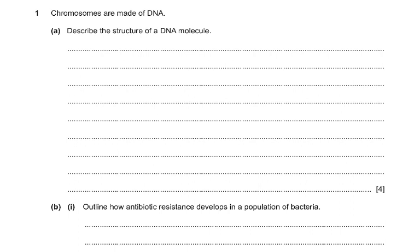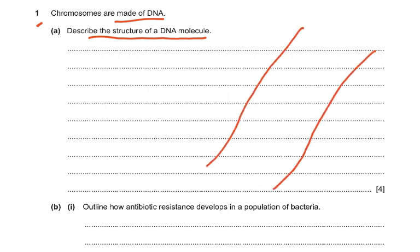Question one: chromosomes are made of DNA. Describe the structure of a DNA molecule. It's very simple — it's got two strands formed into a double helix. It's got four bases: A, T, C, and G. A and T has two hydrogen bonds. If there's C here then there are three bonds and there's G. So it is two strands formed into a double helix, with four bases A, T, C, G. A always pairs with T and C with G, with hydrogen bonds or cross-links between the bases.